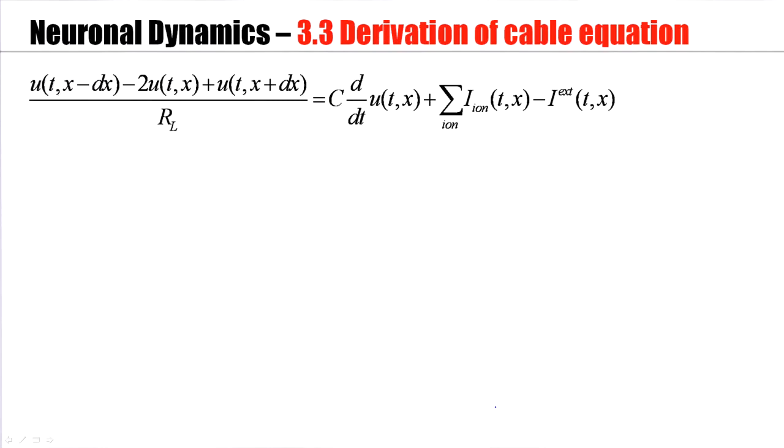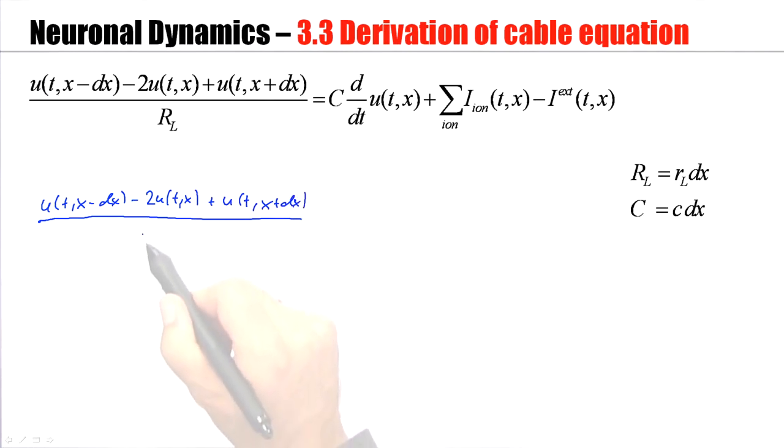So I've repeated here the equation from one of the previous slides. That's the discrete space equation that reflects the conservation of currents in a piece of dendrite. Let's now use our expressions that we just discussed before. So I copy the numerator u(x-dx) minus 2u(x) plus u(x+dx) and I write RL as the specific longitudinal resistance times dx from this formula here.